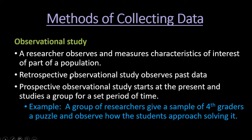Observational studies can be both retrospective and prospective. A retrospective observational study observes data that happened in the past. For example, a historian trying to make sense of something that happened in the past, or an archaeologist trying to make conclusions about a past civilization based on the data and information that they find.